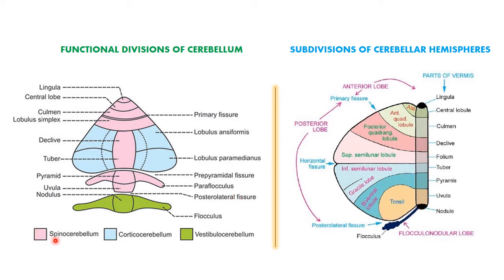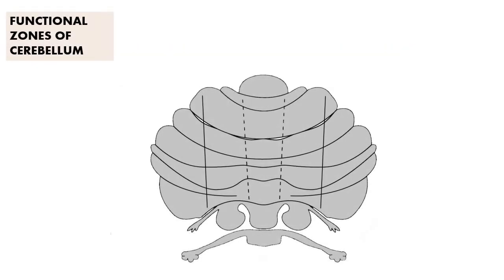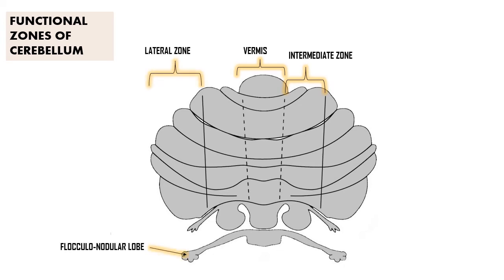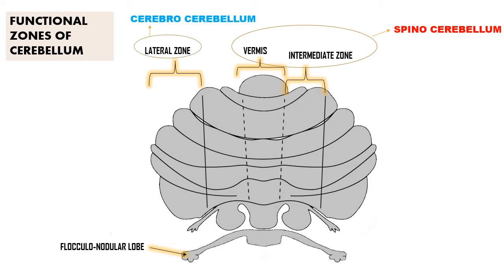The functional divisions are the spinocerebellum, cerebrocerebellum, and vestibular cerebellum. The main functional zones are the vermis, intermediate zone, lateral zone, and flocculonodular lobe. The spinocerebellum is the sum of the vermis and intermediate zones. The lateral zone is also called the cerebrocerebellum. The flocculonodular lobe is functionally called the vestibular cerebellum.